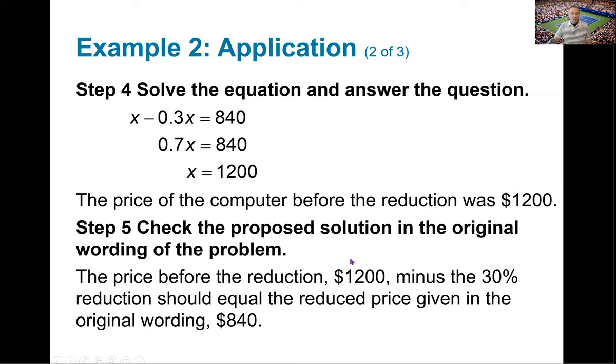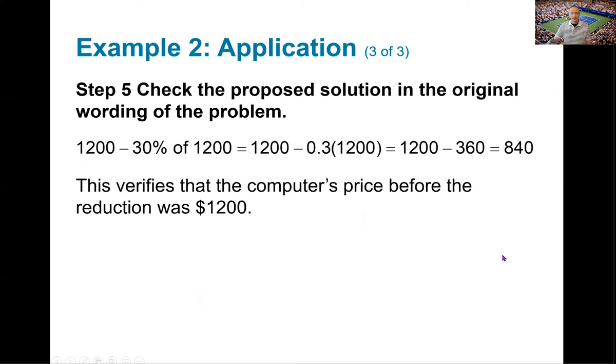Now again, if you wanted to check that, all you would have to do is take 1200 minus 0.3 times 1200, and you'll get the $840, which checks out the original goal of this problem. You can see I did that here. $1,200 minus 30% of $1,200 equals $1,200 minus 0.3 times $1,200. 0.3 times $1,200 is $360. But $1,200 minus $360 gives me the sales price of $840. And that's verifying that the original retail price of the computer was $1,200.